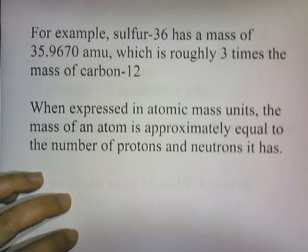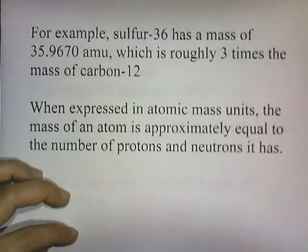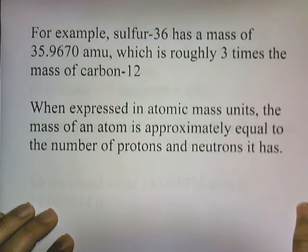which is just a little bit short of the 36 we have there. So when you see how many atomic mass units there are, it comes pretty close to the total number of protons and neutrons in the nuclide.